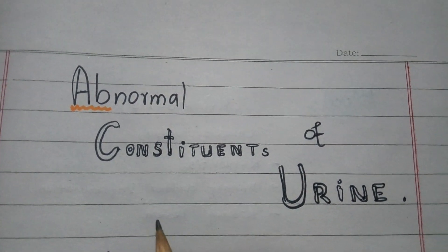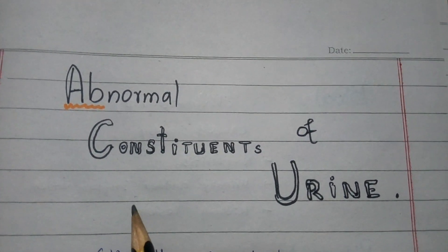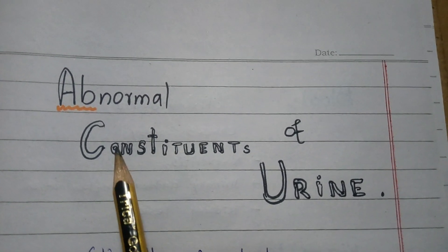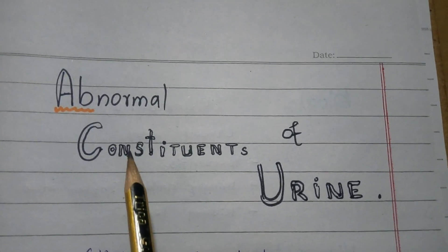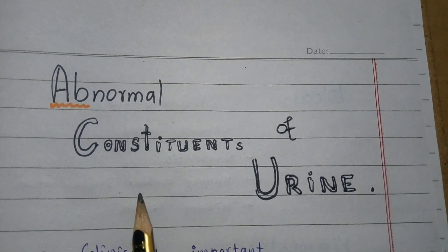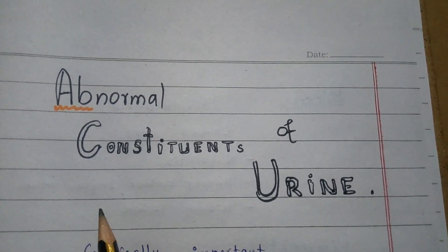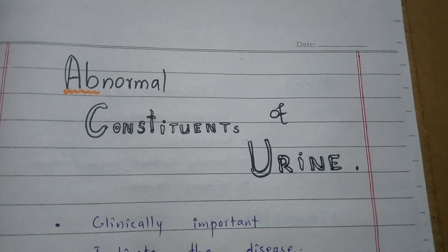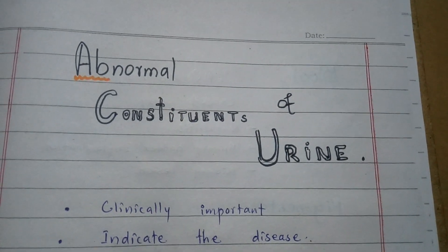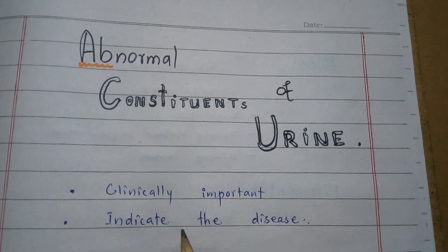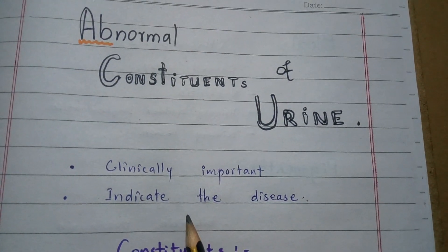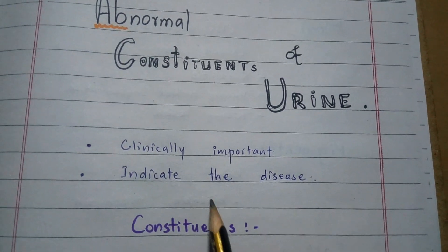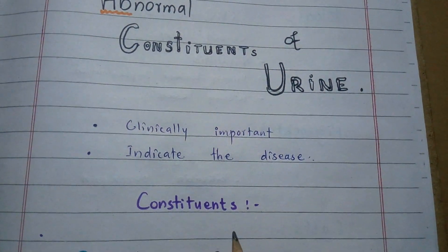Assalamualaikum students, welcome to my channel. In this video I will tell you about the substances that make the urine abnormal. The abnormal constituents of the urine is the topic for this video. Abnormal constituents of the urine are clinically very important because the abnormality in the urine indicates the disease or unhealthy condition in the body.